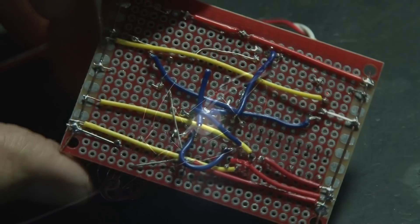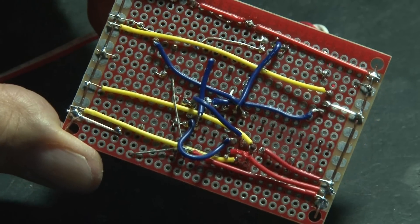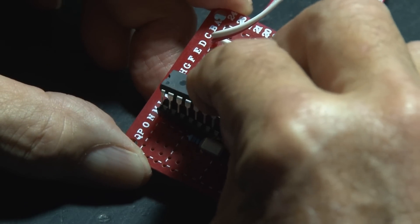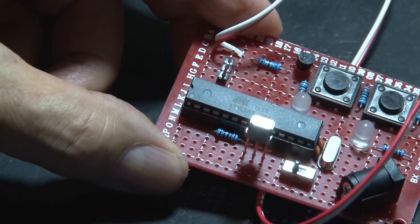All the wiring is done on our infrared controlled thingy, and the last step is to add the ATmega microcontroller. Be careful to line up all those pins and push it down in place.